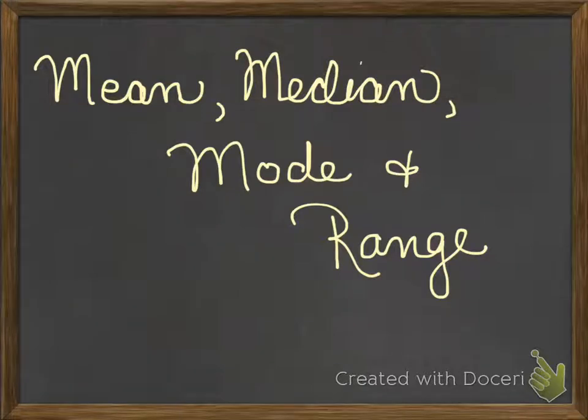Welcome back, sixth grade. Today's topic is mean, median, mode, and range. So we're going to focus on how to find these four things. Together, these are called measures of central tendency. And we'll talk more about what that means in class, but let's focus on how to find each of these four things.